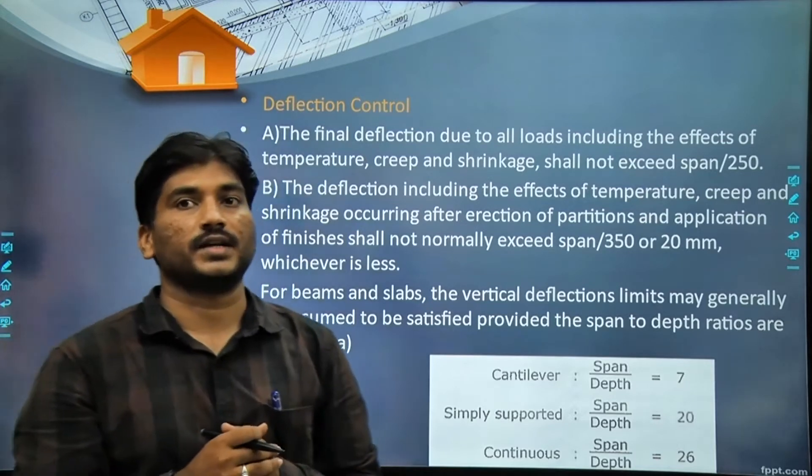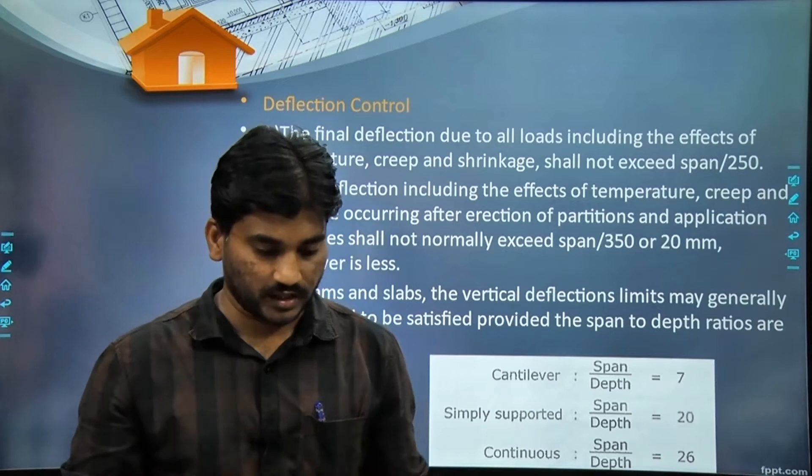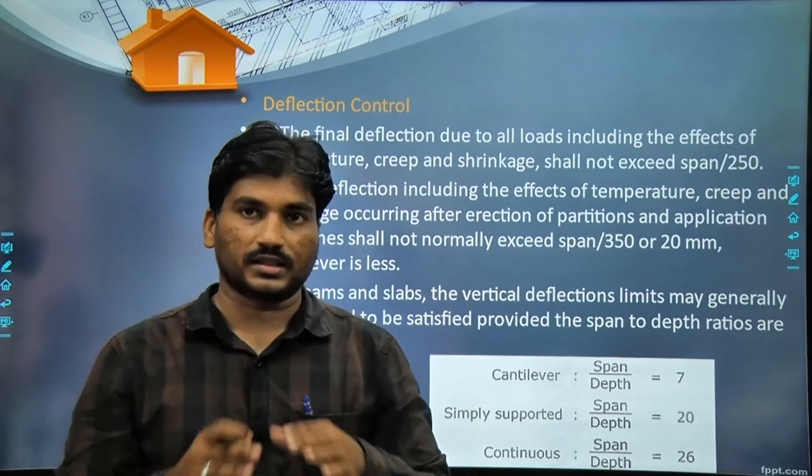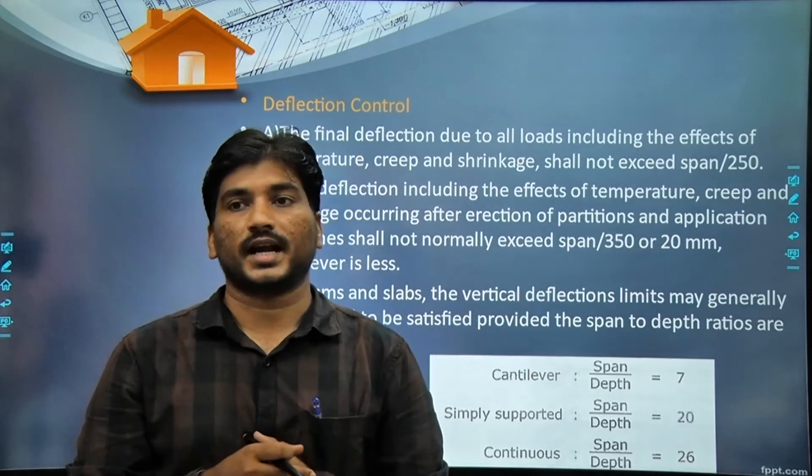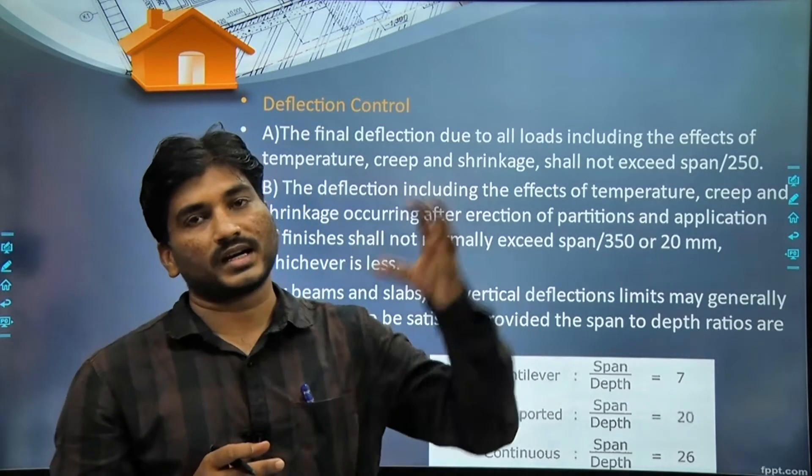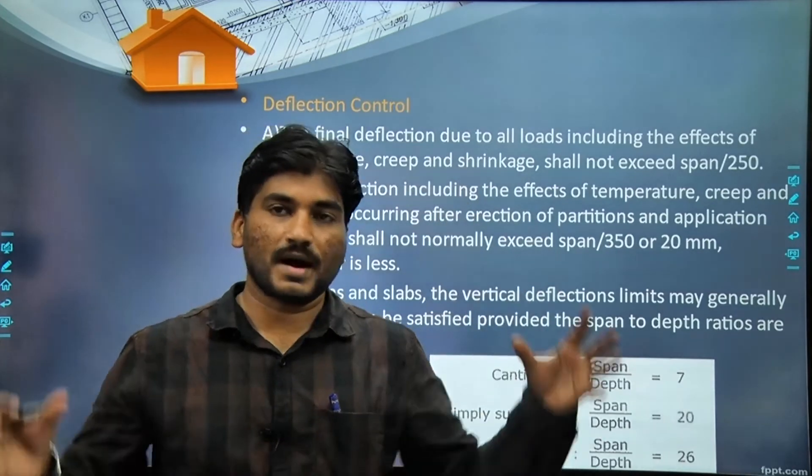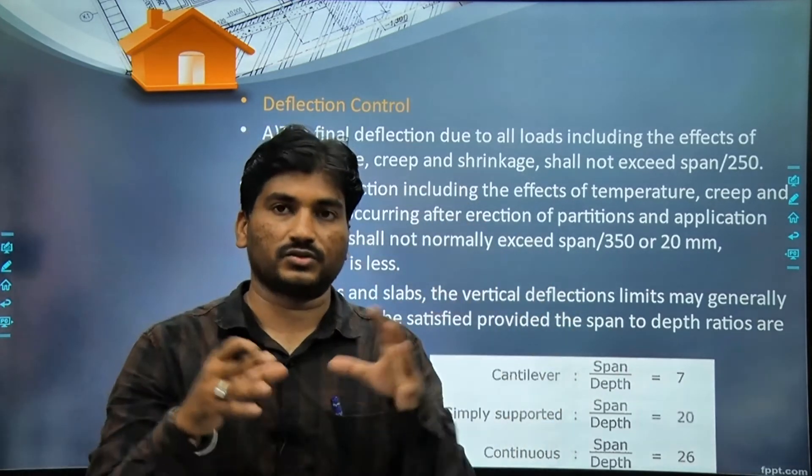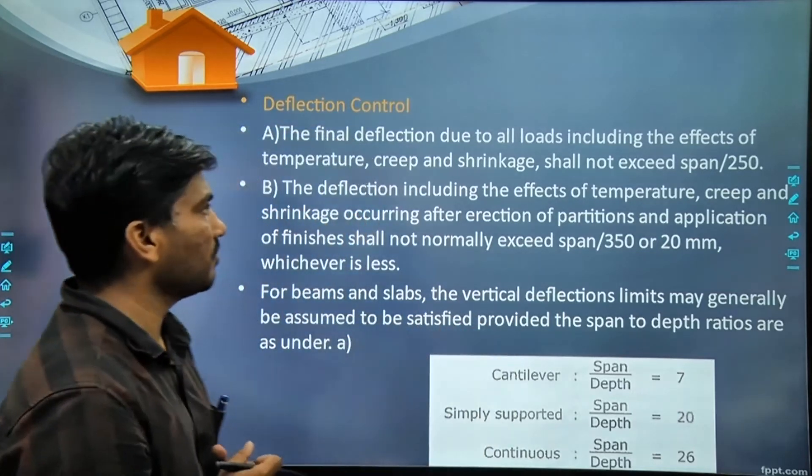The first clause says that final deflection - when we construct a structure, we construct footing, then columns, then beam and slab, then walls, and after that furniture comes, live load comes, occupancy comes. After all this, after human beings and live load and dead load, the final deflection should be maximum how much?